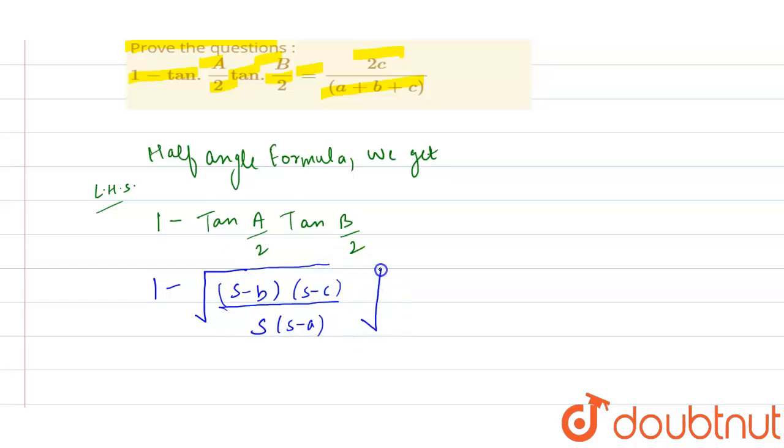Similarly, the formula for tan B by 2 is square root of s minus a multiplied by s minus c divided by s multiplied by s minus b.